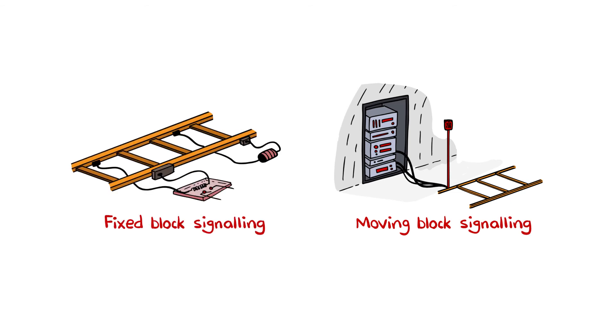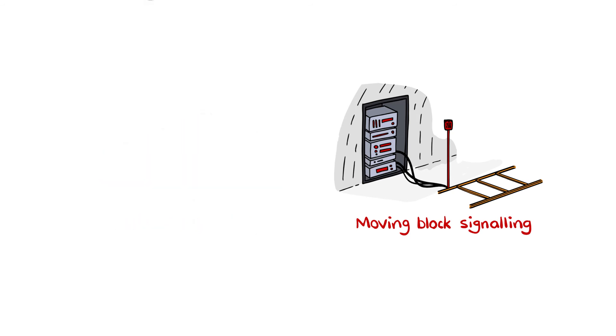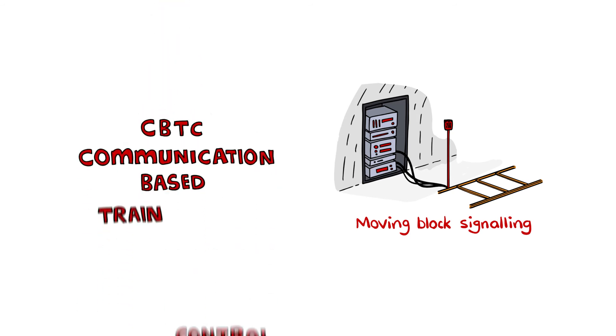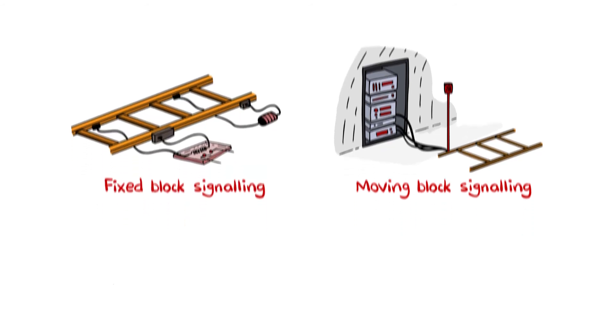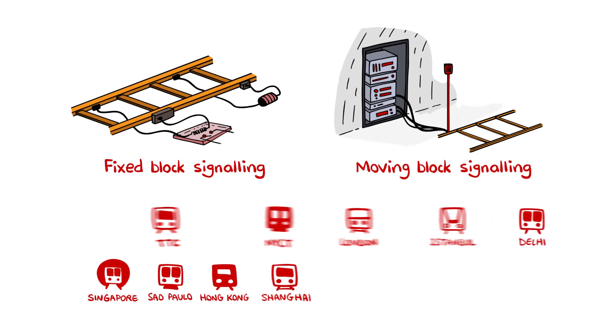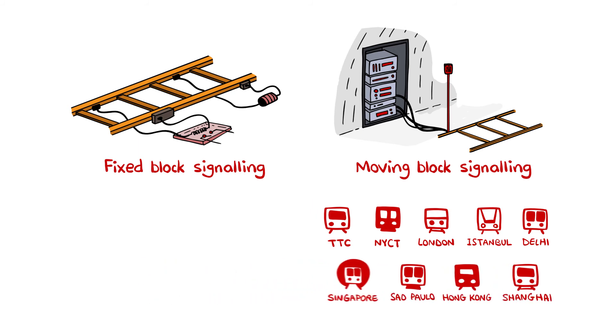The technology which permits moving block signalling is radically different from the technology used to implement conventional fixed block signalling. Moving block signalling is enabled by CBTC or communication based train control. Over the past 35 years, transit operators are increasingly switching to CBTC and moving block signalling.